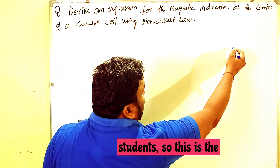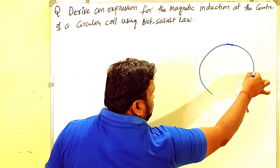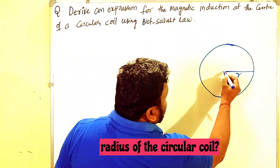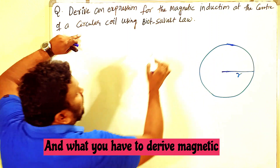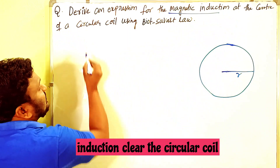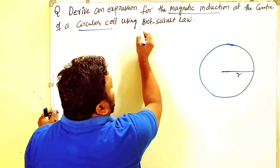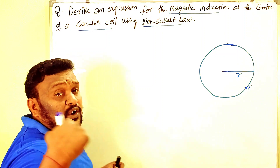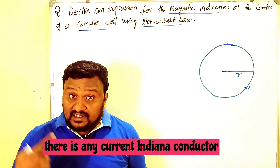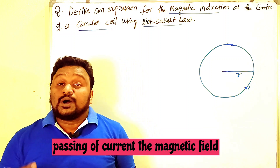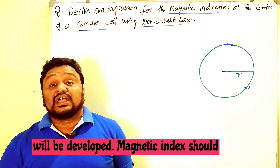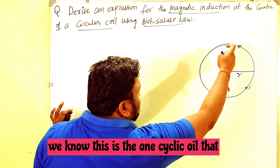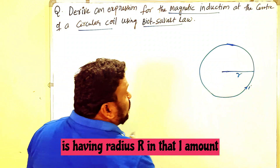This is the circular coil having radius r, where r is the radius of the circular coil. We have to derive the magnetic induction at the center of the circular coil using Biot-Savart's law. Here, a current I is passing through the circular coil. According to Oersted's principle, when current passes through a conductor, a magnetic field is developed.